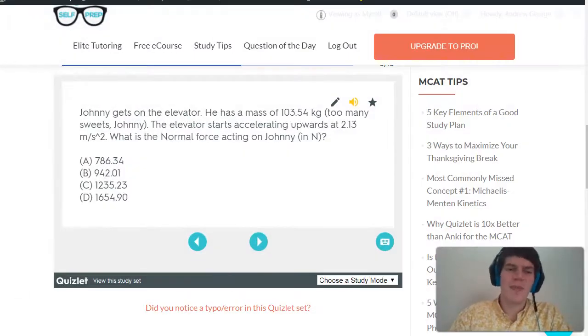If we look at the answer choices, we notice that none of the answers are exactly equal to 1,200 because we used approximations to calculate our answer. But the closest answer choice is C, therefore I'm pretty confident that it is the correct answer. Which it is.